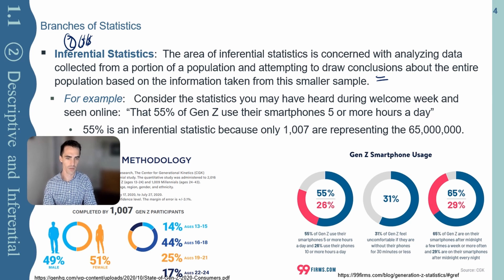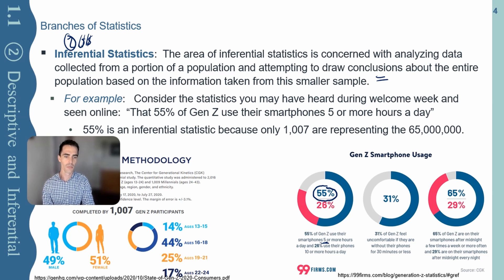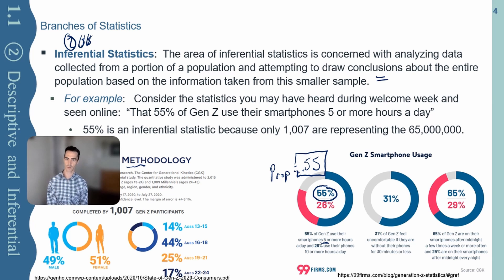Here's a little example. Somebody might claim, or you might read it somewhere, that 55% of Gen Zers use their smartphone five hours or more a day. You might look at that and say, what a claim — what are these statistics they're pulling from? This 55%, or as a proportion p̂ = 0.55, is inferential statistics. It's built on a sample.